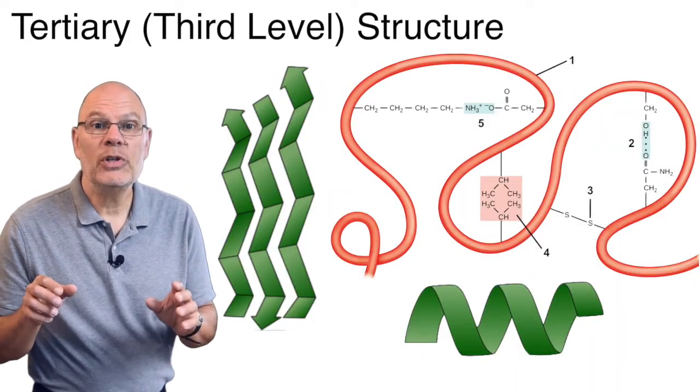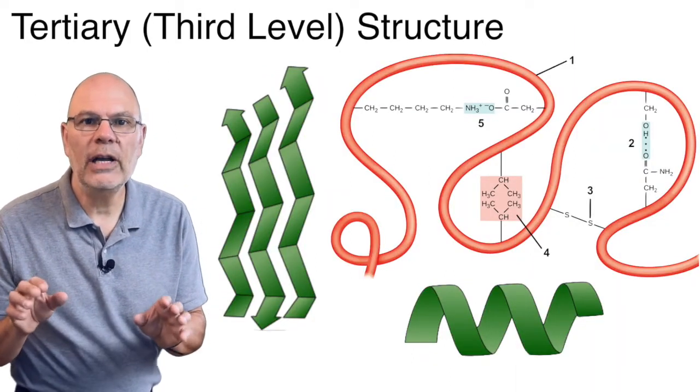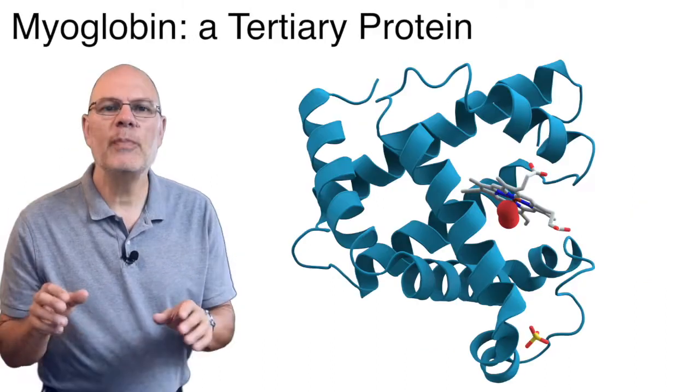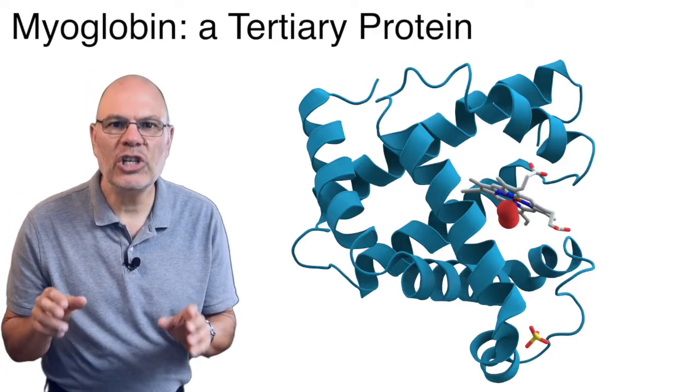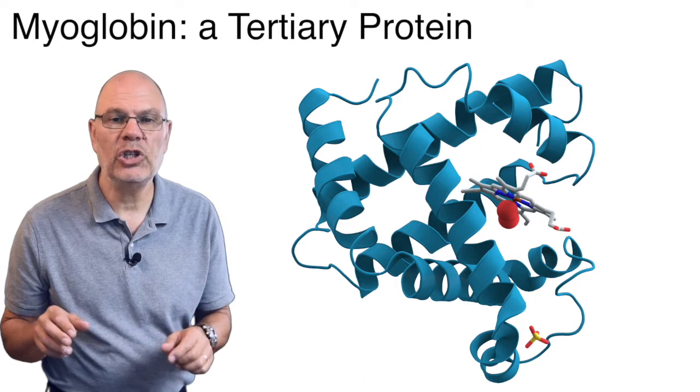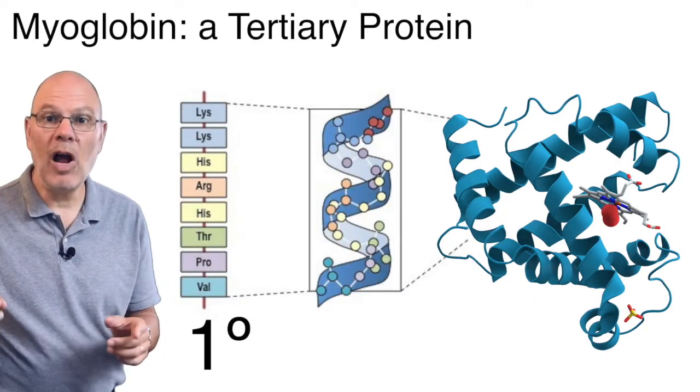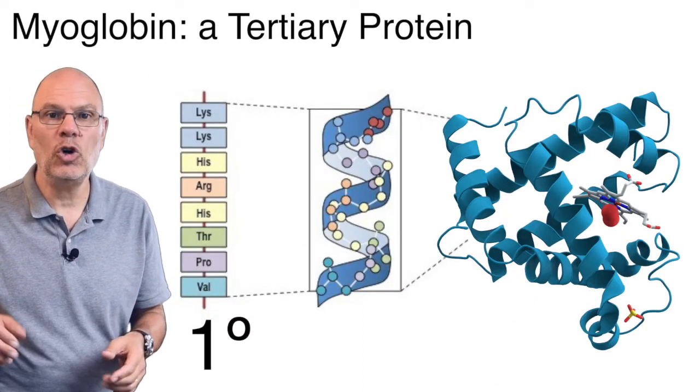Combine these tertiary interactions with secondary structure and very complex shapes can emerge. Here's myoglobin. It's an oxygen-carrying protein within muscle tissue. This shape was set down by the primary structure, which is genetically determined,